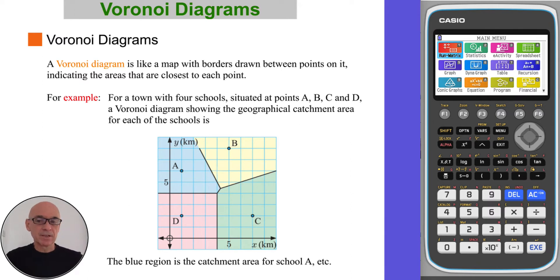A Voronoi diagram is like a map with borders drawn between the points on it, indicating the areas that are closest to each point.